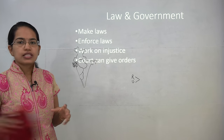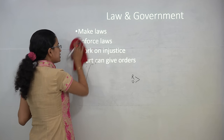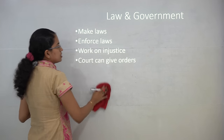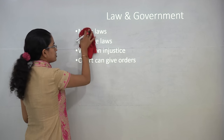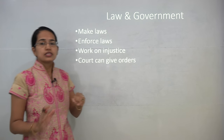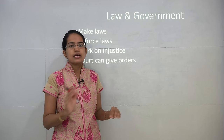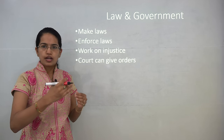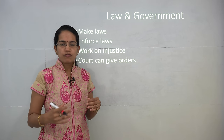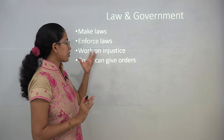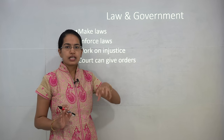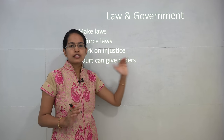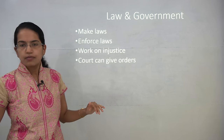The next important thing is maintaining law and order. Maintaining peace and law and order is one of the major works of the government. What is important here is to make laws. Once laws are formulated, the enforcement of those laws is very important, because if a law is drafted and not implemented, that law is useless. Laws are enforced to curb injustice or to work around the problem of injustice or inequality. And finally, based on the laws and their enforcement, courts can give certain orders which have to be followed by the people or the residents.